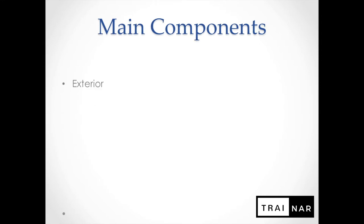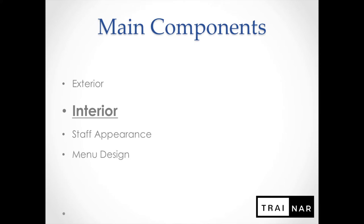The main components of istatization are exterior, interior — which we'll be discussing today — staff appearance, menu design, and product design. These are the five components of istatization. When thinking of design in a tourism outlet, whether a hotel, restaurant, or even a tourism agency, you have to think of those components. For the purpose of this lecture, we're going to be discussing purely the interior.